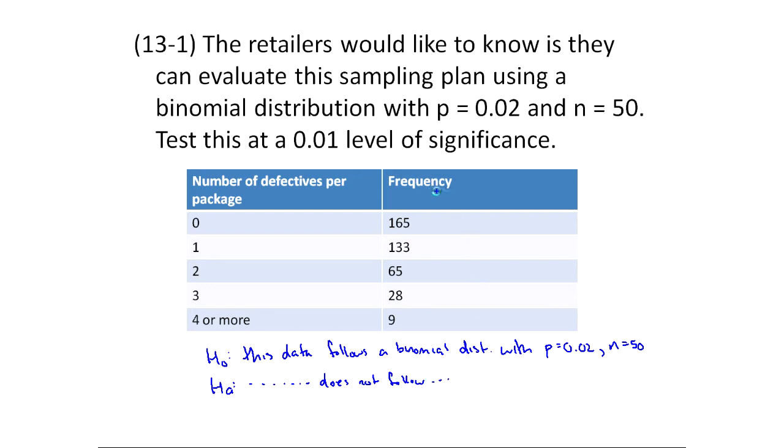This data from the actual counts, these are observed frequencies, because these come from the data that was collected. These are observed. And so what we need to do is figure out expected under H naught. If this data came from such a binomial distribution, what would we expect as the frequencies?